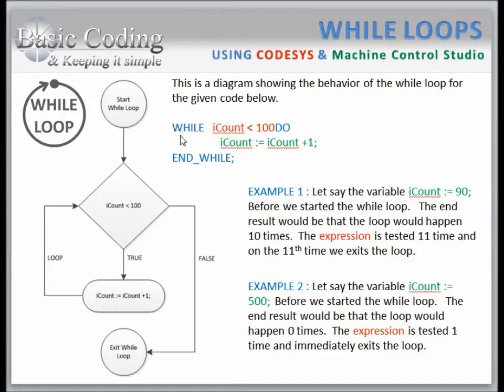The word WHILE starts the while loop, the word END_WHILE ends the while loop, and the word DO separates our expression from our main body of code that lives inside the while loop. In this case, our main body is a variable called iCount and it's being set to itself. In other words, each time this loop executes, the value inside iCount will climb by a value of one.